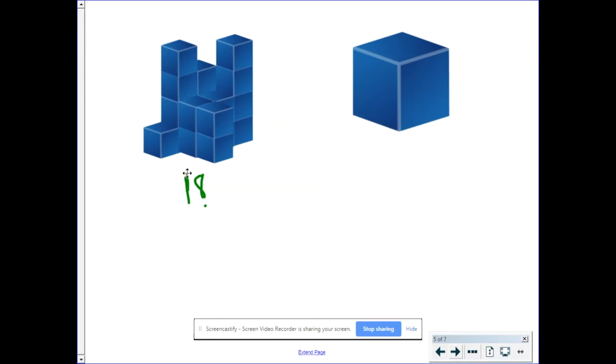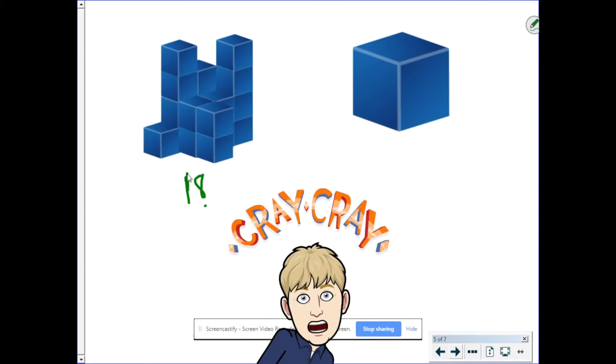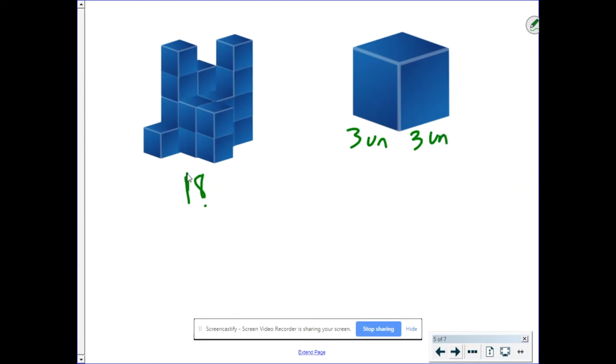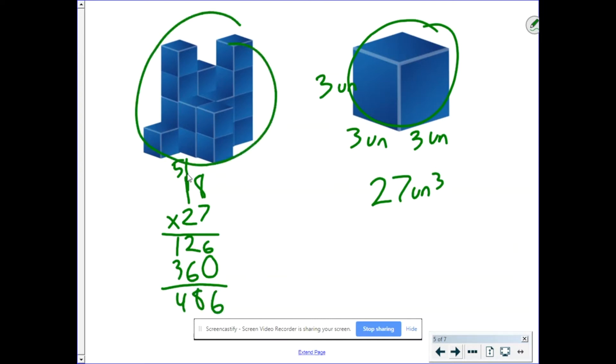Let's do another example. What if instead I multiply my side lengths by three? So the length was three, the width was three, and the height was three. Well, then the volume of my individual cube would be three times three is nine times three is 27 cubic units. So then I go back and say, well, there's 18 of them. So it's 18 times 27. So the volume of this entire figure is 486 cubic units.